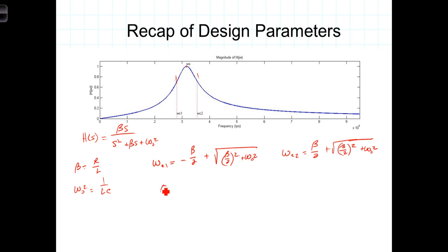Finally, Q, or the quality factor of the filter, is equal to the ratio of omega naught over beta.